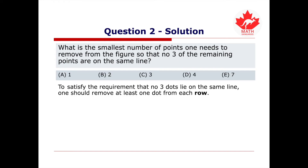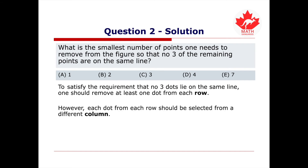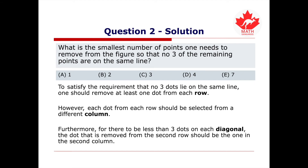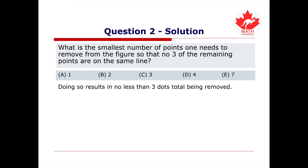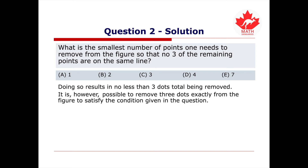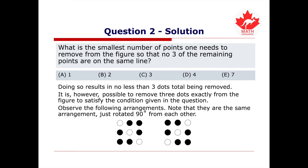To satisfy the requirement that no three dots lie on the same line, one should remove at least one dot from each row. Each dot removed from each row should be from a different column so that no three dots lie on the same column. Furthermore, for there to be fewer than three dots on each diagonal, the dot removed from the second row should be the one in the second column. This results in no fewer than three dots being removed. It is possible to remove exactly three dots such that no three remaining points are on the same line, as shown in the following arrangements — which are the same arrangement rotated 90 degrees from each other. The correct answer is C.